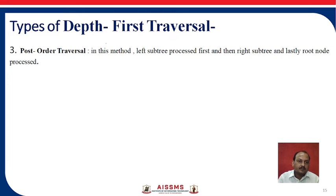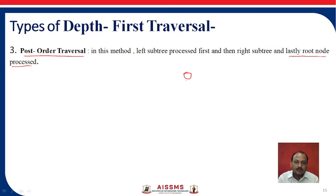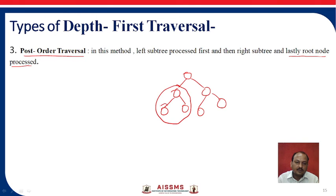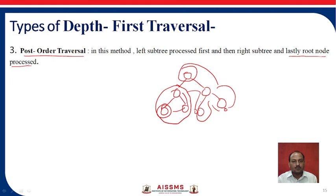The last type is post-order traversal. In this method, the left subtree is processed first, then the right subtree, and lastly the root node is processed. So you start from the leftmost leaf, traverse all left subtree nodes, then the right subtree nodes, and finally visit the root node.